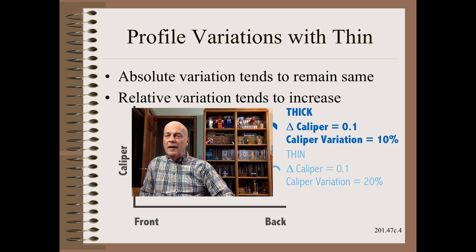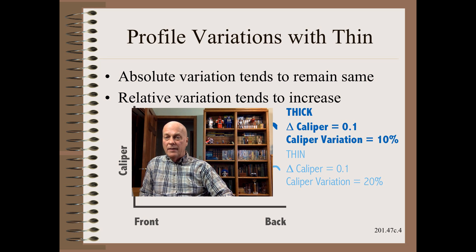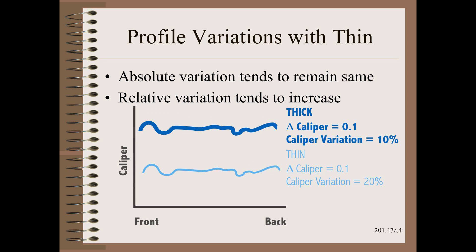What we mean by profile is the variation of some important property across the width — here, we are concerned with thickness. The web and especially the winder may complain on thickness profile variations in the range of 1 to 10%. At 1%, problems may be unnoticeably small; at 10%, the product may be unmarketable. Most web makers tend to have a relatively constant absolute variation, so when we reduce average thickness, the relative or percent variation increases — and relative variation is what the web and the winder care about and will complain about.